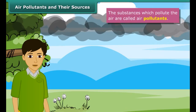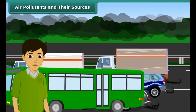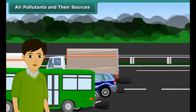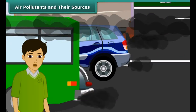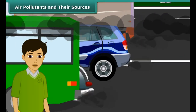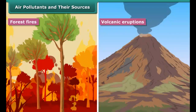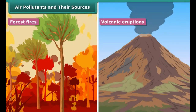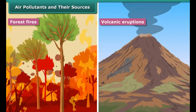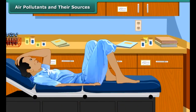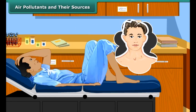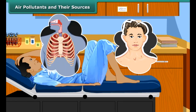These gases are often released by the engines of vehicles like trucks and buses. Sometimes they may come from natural sources like smoke and dust arising from forest fires or volcanic eruptions. These gases can make healthy people sick and sick people even worse — they affect your eyes and throat.